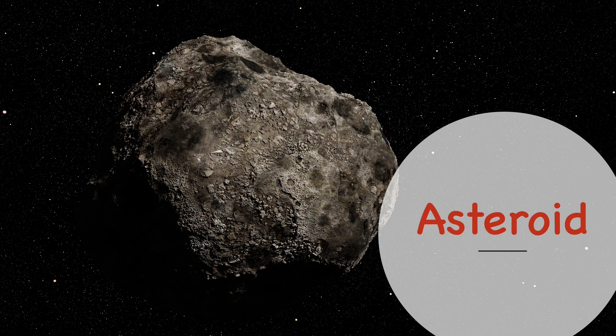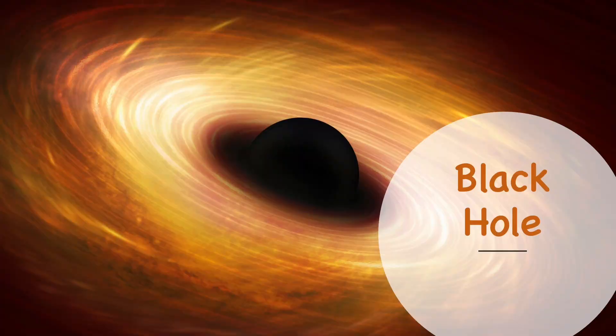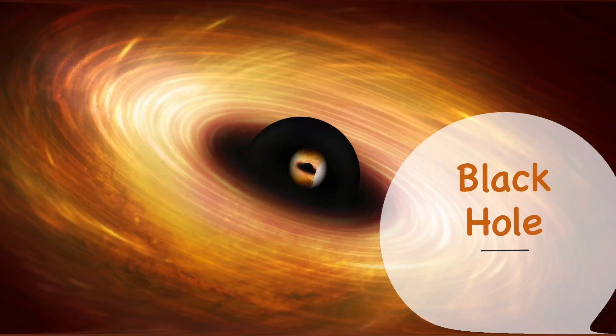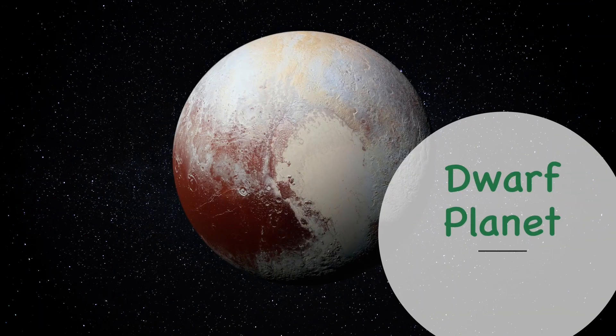A is for asteroid. B is for black hole. C is for comet. D is for dwarf planet.